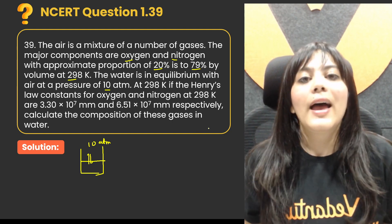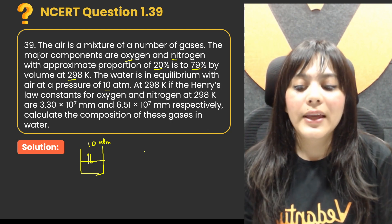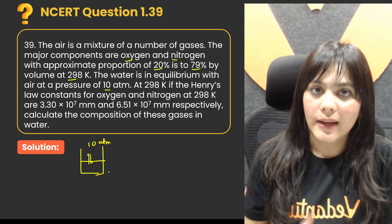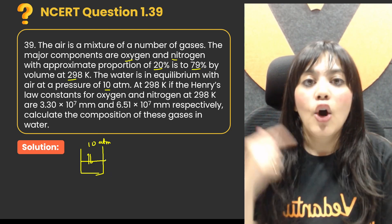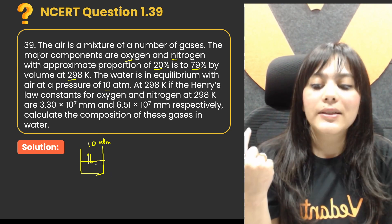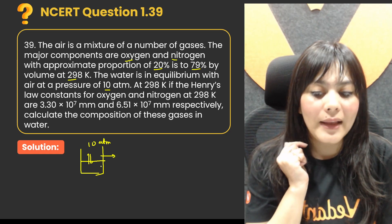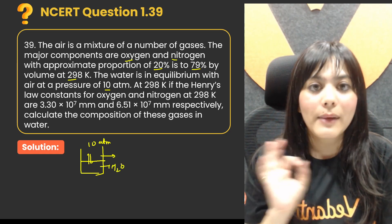To understand the question: if you have a beaker, it contains water. Above the water is the atmosphere at 10 atmospheres. So the air is at 10 atmospheres above the water, and we need to find out the equilibrium pressure of the gases dissolved in the water.